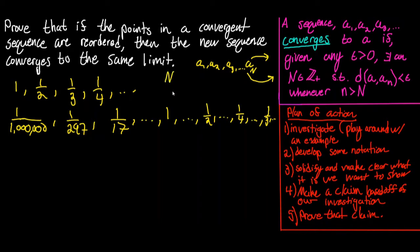One thing to notice in this definition is that our epsilon dictates what our N value is — that is, N is a function of epsilon, or N is dependent on the choice of epsilon. So let's say for this particular sequence we have an epsilon strictly greater than zero such that the N value that works is N equals 4.